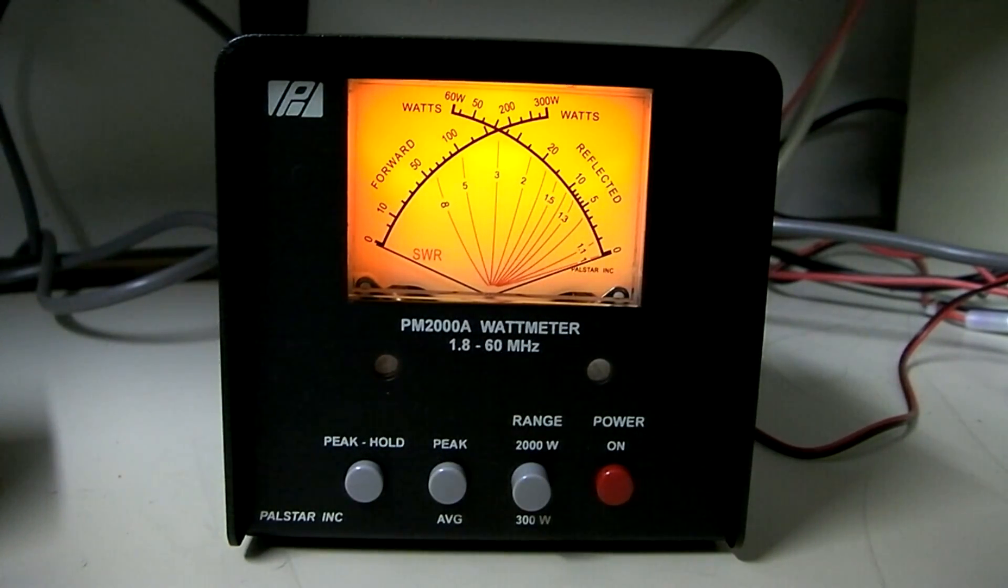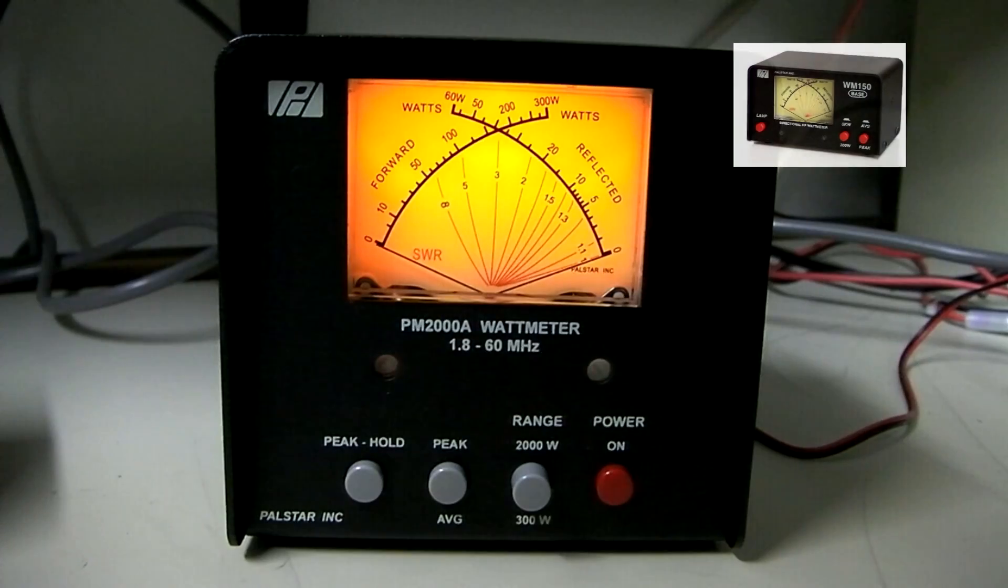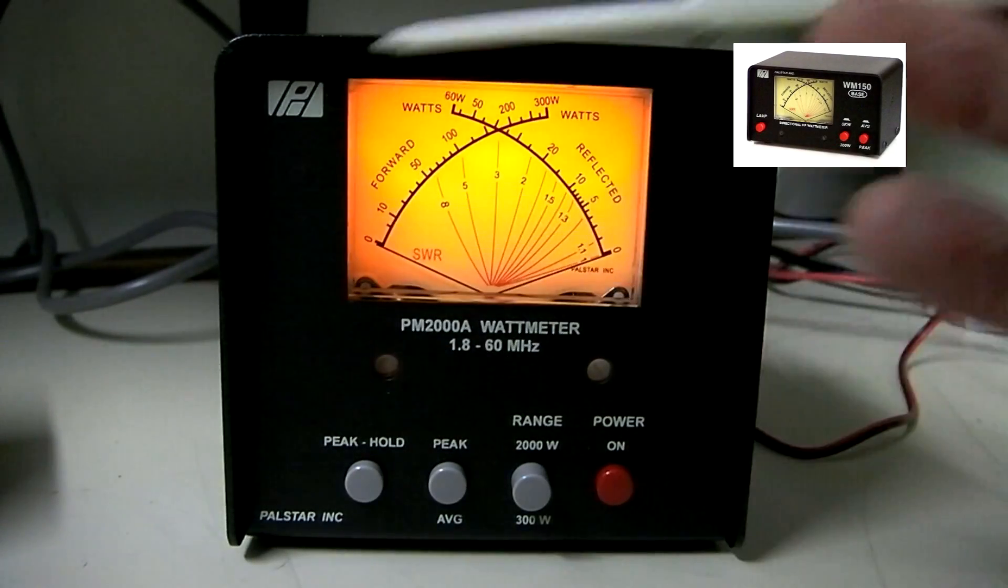This, in particular, is the PALSTAR PM2000A Watt Meter. PALSTAR previously made a popular meter that was called the WM150M, and it used a very similar box.